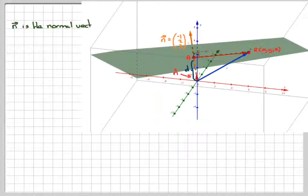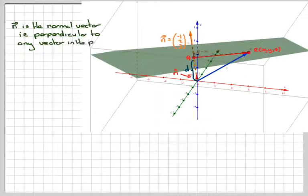So, N is the normal vector, i.e. perpendicular to any vector in the plane. The particular vector we're interested in at the moment is the vector A to R. N with a little hat on is called the unit normal vector. So, it is perpendicular, but it has only length of 1. Which means that from here to here, from O to A, this will be the vector D times the unit normal vector.